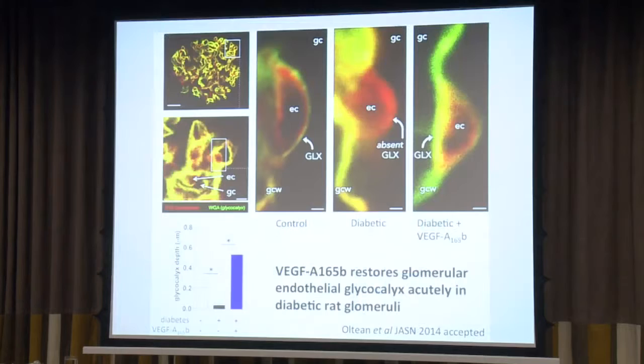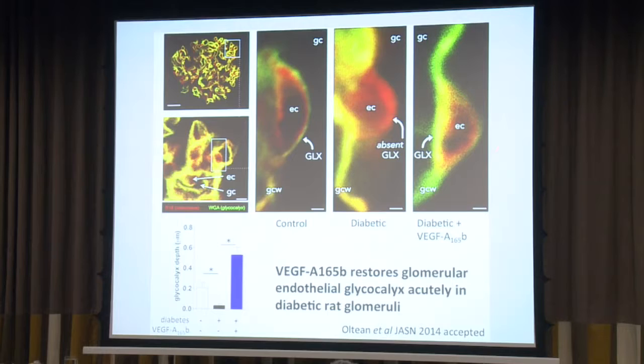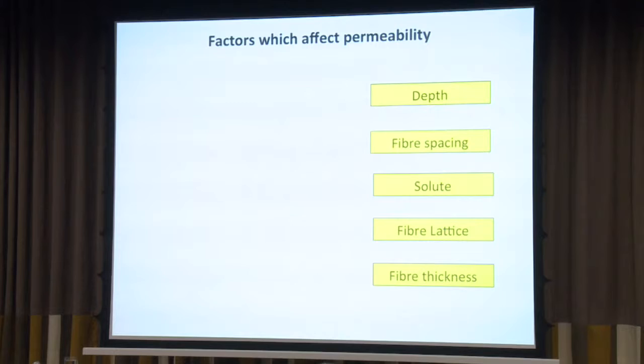What that tells us is that the change in glycocalyx depth coincides with a significant increase in microvascular solute permeability. We can do the same method — this has just been accepted — we can do the same thing in a glomerulus. We can see this over the endothelial cell, which means we don't have that double membrane problem from the membrane dye. In diabetes, it's much less and missing, and we can recover that to some effect. So the glycocalyx is definitely related to permeability, but how it actually works, and whether it's the only factor or just correlated to permeability, we don't actually know.